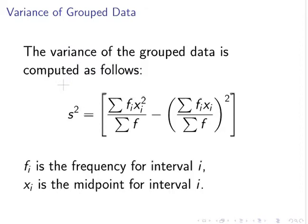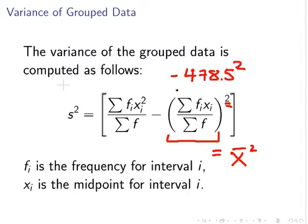But I'll draw your attention to the fact that this part here is equal to x̄ squared. So we've actually got quite a bit of work done already. So that's minus 478.5 squared. Usually when you're calculating the variance, you would have calculated the mean first. In fact, it makes no sense not to do it first.